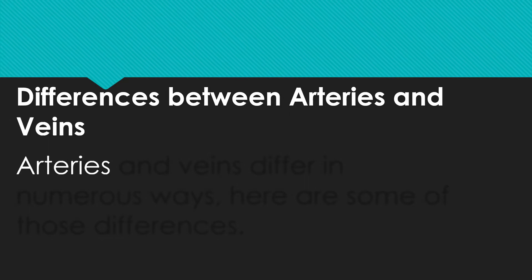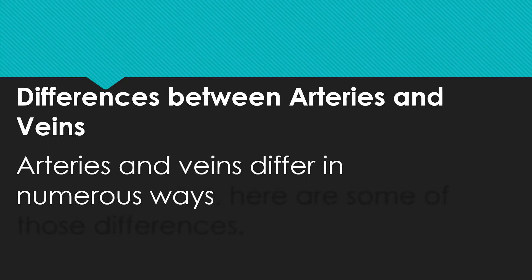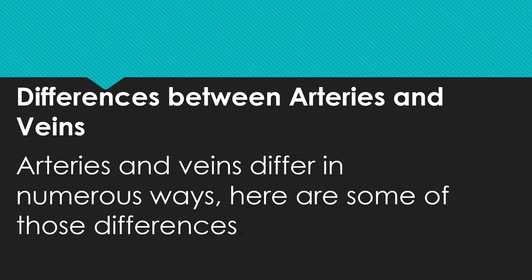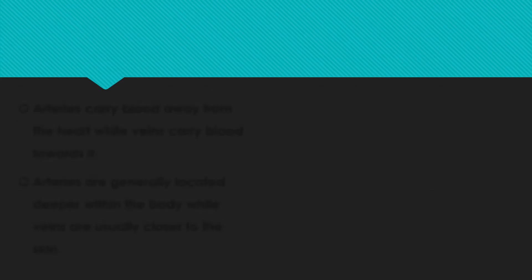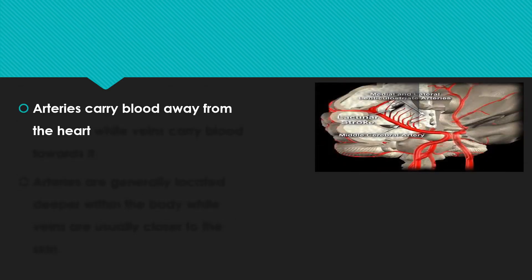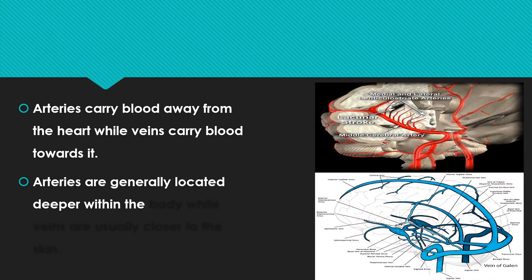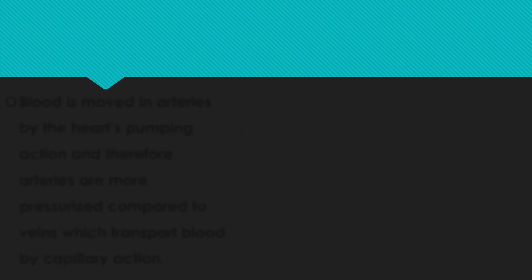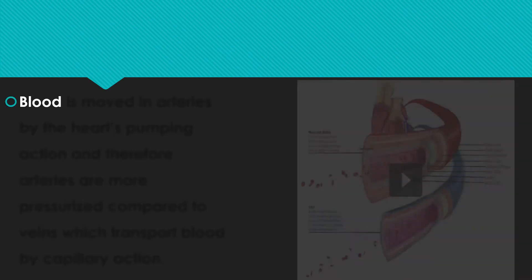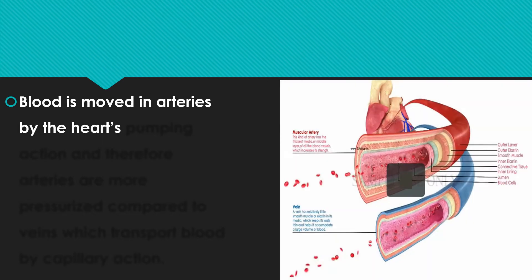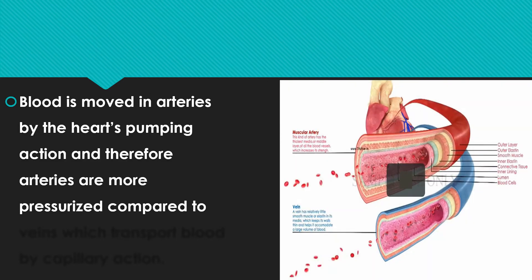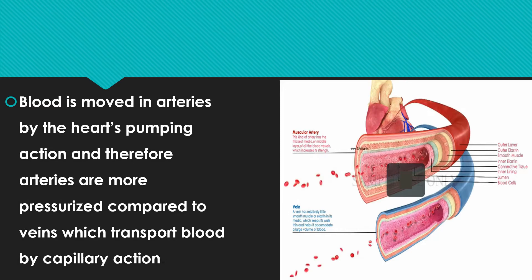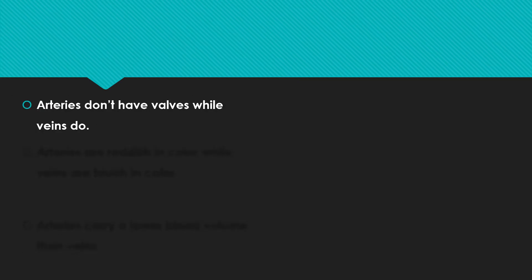Arteries and veins differ in numerous ways. Arteries carry blood away from the heart while veins carry blood towards it. Arteries are generally located deeper within the body while veins are usually closer to the skin. Blood is moved in arteries by the heart's pumping action, and therefore arteries are more pressurized compared to veins, which transport blood by capillary action.